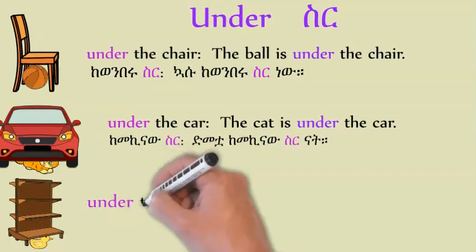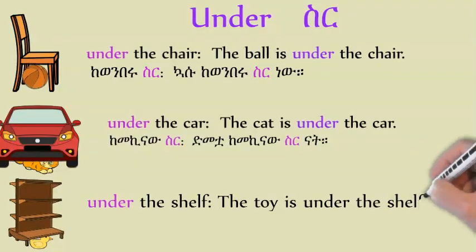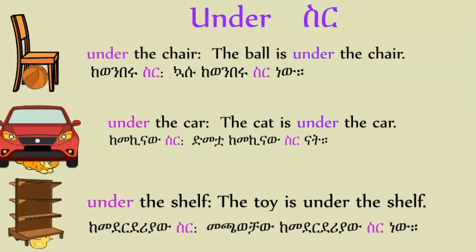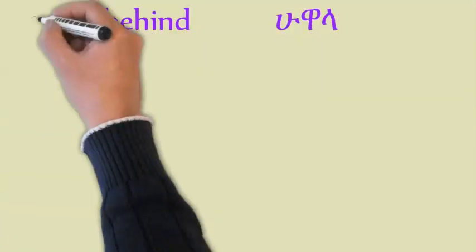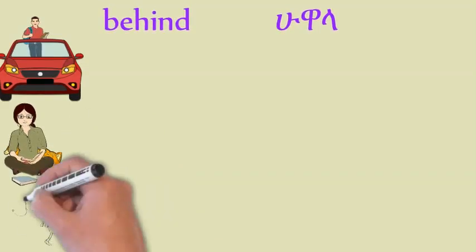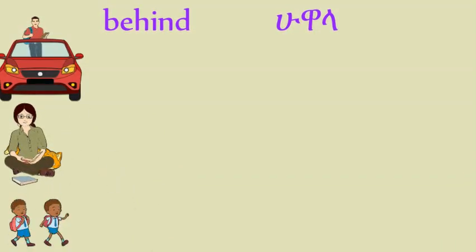Under the shelf — the toy is under the shelf. The man is behind the car. The cart is behind the girl. Tom is behind Jerry.